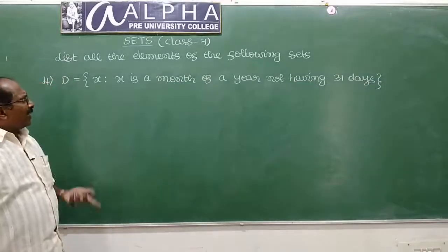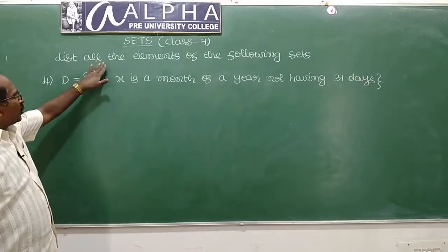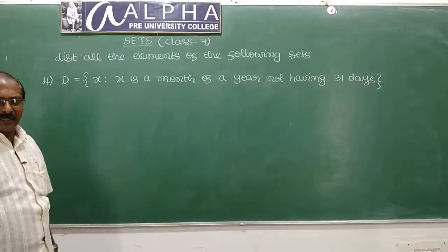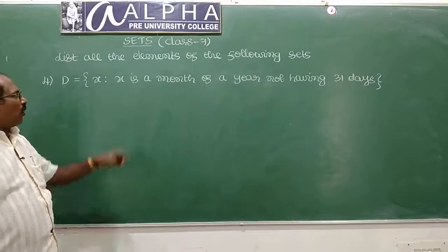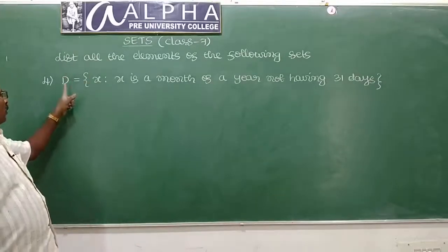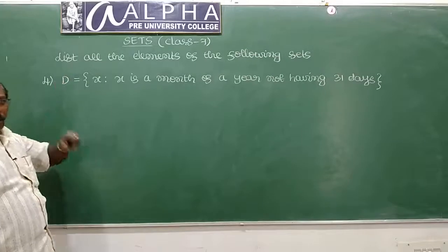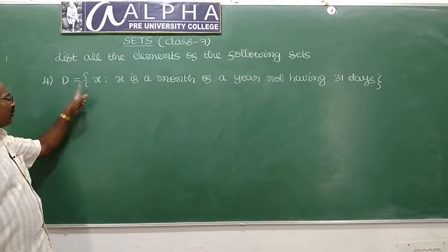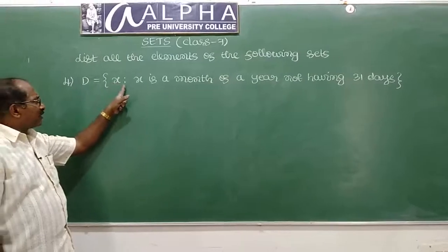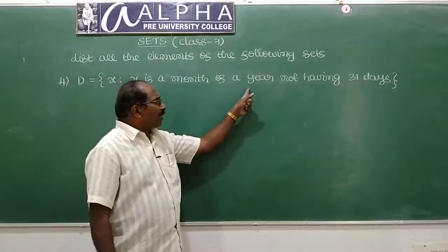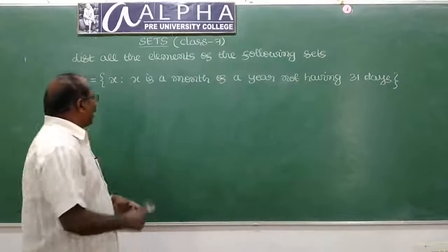In class 6, we discussed listing all elements of given sets. Now, problem number 4: The set D is equal to the set of all x such that x is a month of a year not having 31 days.